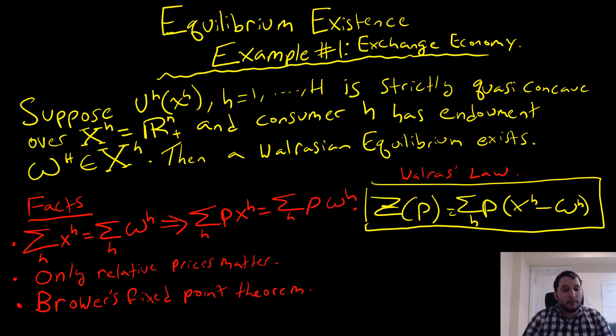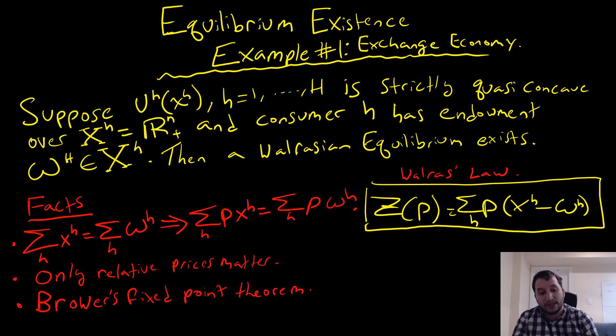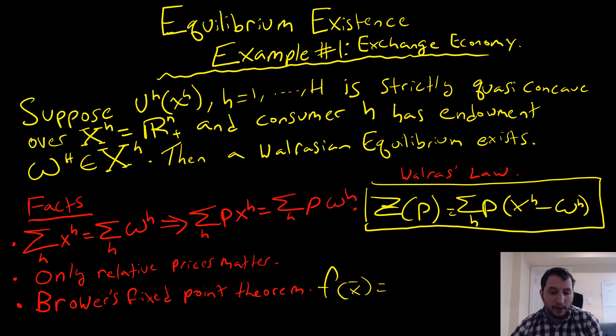We have to acknowledge some economic facts before we prove this. The first fact is going to be with reference to Walras's Law. The next fact is that only relative prices matter — some people call this a price normalization theorem. And the next one is Brouwer's Fixed Point Theorem, which simply says that if we have a closed and bounded function, our function evaluated at some point x-bar will spit out a point x-bar.